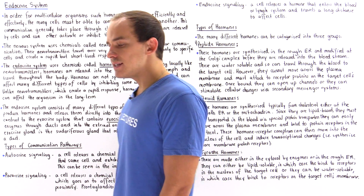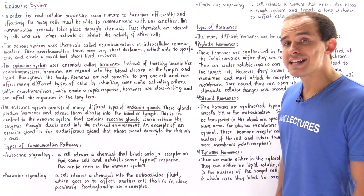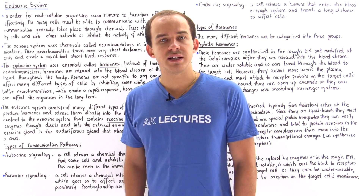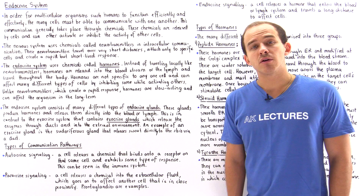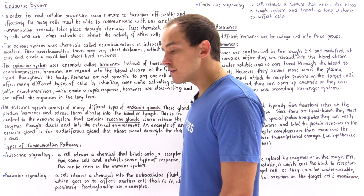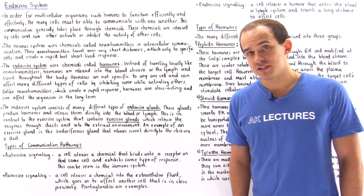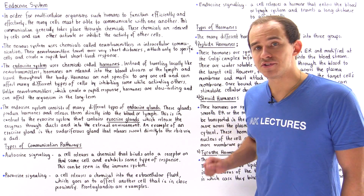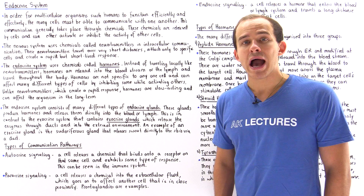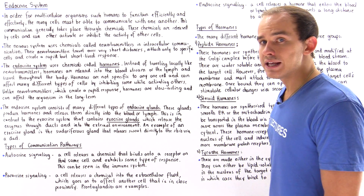The endocrine system consists of special types of glands that produce our hormones, known as endocrine glands. Endocrine glands release hormones into the bloodstream or into the lymph system. This is in contrast to a different type of system known as the exocrine system, which uses exocrine glands. Exocrine glands release chemicals into ducts, and these ducts carry the chemicals into the external environment.